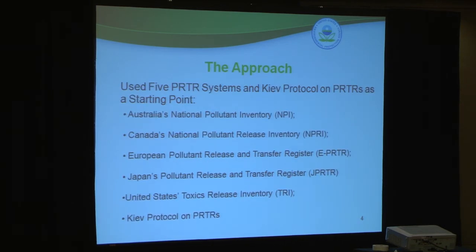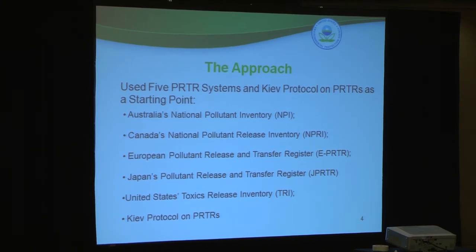What we did is choose five PRTR systems, with the Kiev Protocol on PRTRs as a starting point. The five systems are: Australia's National Pollutant Inventory, Canada's National Pollutant Release Inventory, the EU's European Pollutant Release and Transfer Register, Japan's Pollutant Release and Transfer Register, and the U.S.'s TRI, along with the Kiev Protocol on PRTRs. These systems were selected because of the number of chemicals and sectors they cover, their size, and their location throughout the world.